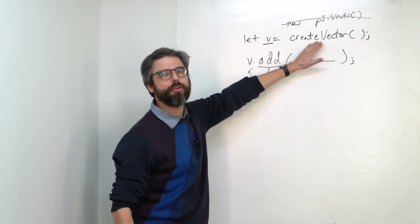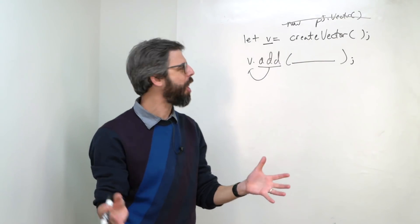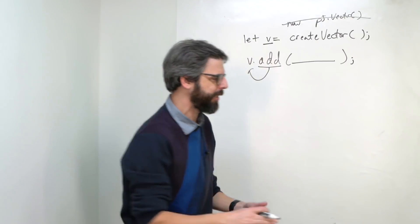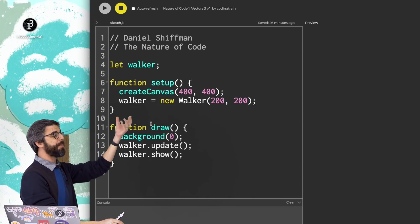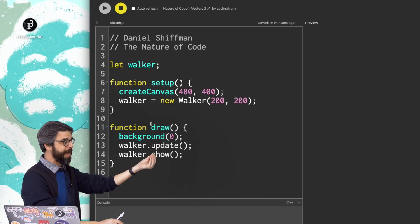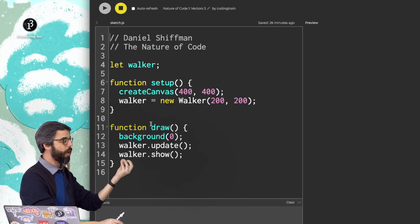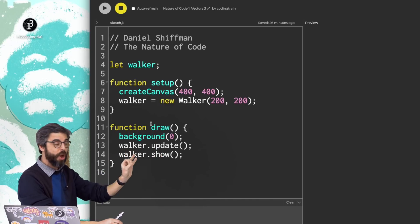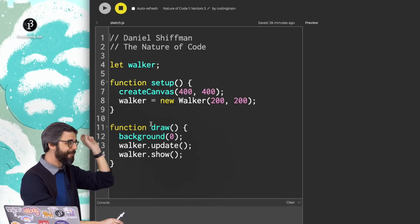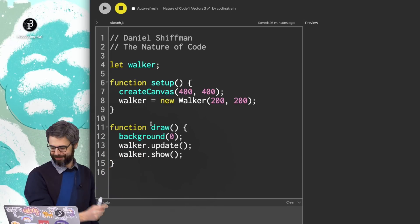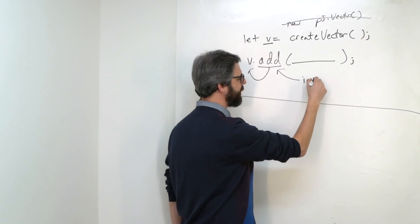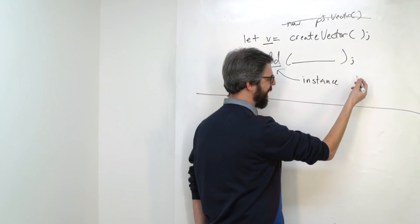And that's just something specific to p5 itself, which has in it a createVector function to make the vector object. But sure, in most cases, like this one right here, I'll be making a new walker object. And then I'm calling instance methods walker.update, walker.show. Those execute the code to run the functionality of this particular walker object. So the term I'm using is instance method or function.